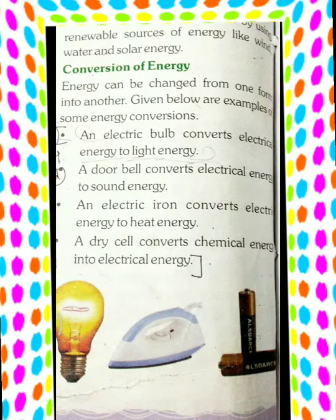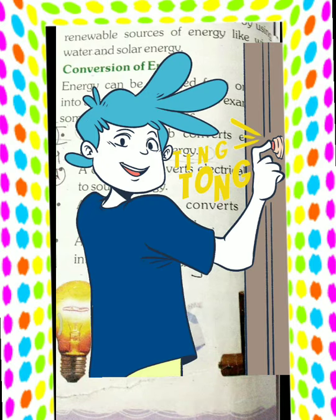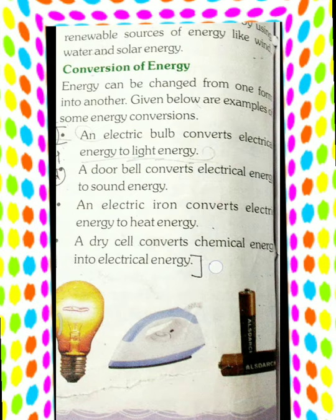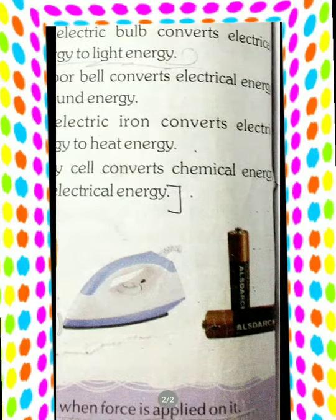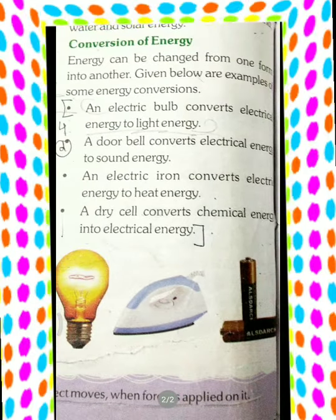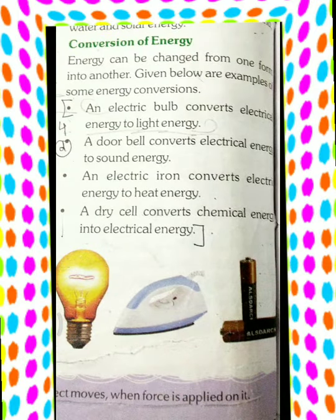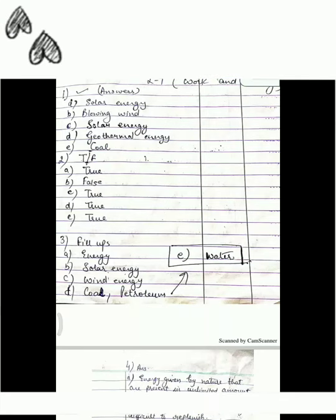A doorbell converts electrical energy to sound energy. An electrical iron converts electric energy to heat energy. A dry cell converts chemical energy to electrical energy. Now let's come to the book exercise.